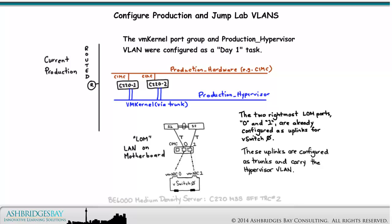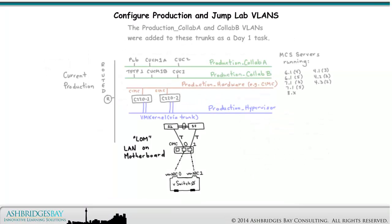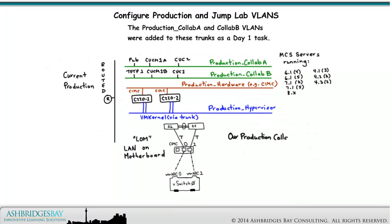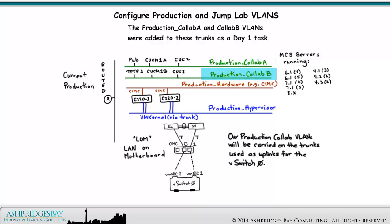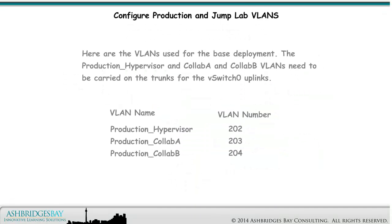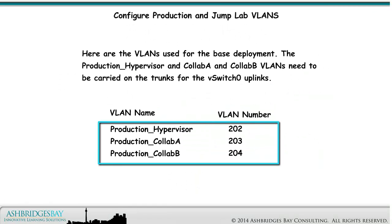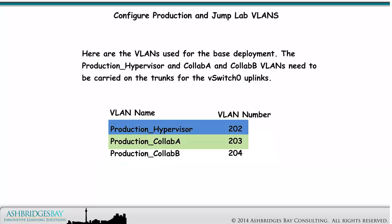The networking diagram shown here is for the BE6000 medium density server, but will work for any C-Series having only the LAN on motherboard card. Our production collab VLANs will also be carried on the trunks used as uplinks for V-switch 0. The production collab A and collab B VLANs were added to these trunks as a Day 1 task. Here are the VLANs used for base deployment. The production hypervisor and collab A and collab B VLANs need to be carried on the trunks for the V-switch 0 uplinks.